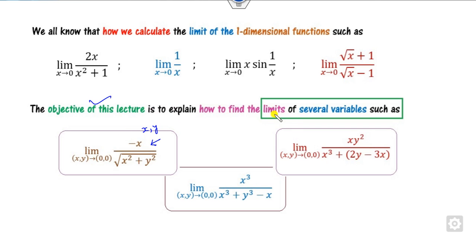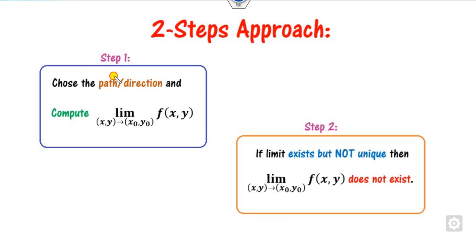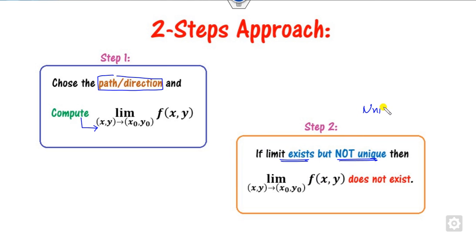The objective of this lecture is to explain how you can find the limits of several variables. I will discuss a two-step approach. First, we choose the path and direction, then we find the limits. If the limit exists but is not unique, then the limit does not exist. Remember: if it is not unique, the limit does not exist. But if the limit is unique, we cannot yet say whether the limit truly exists or not.